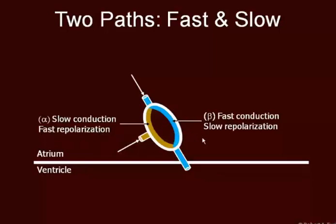When the signal comes in, it comes around the fast pathway down to the ventricles. However, it's also moving down the slow pathway. It collides with the information coming around this way and virtually nothing happens.